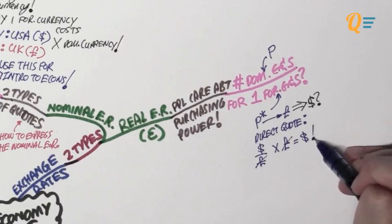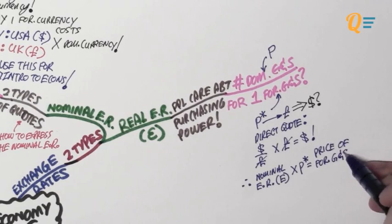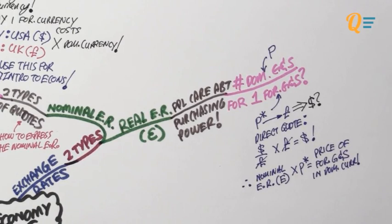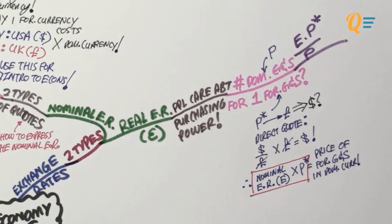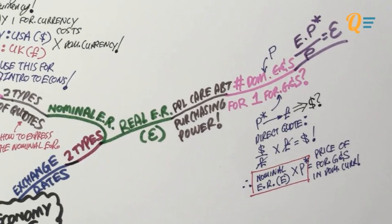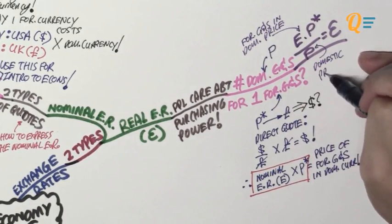We are using the direct quote, which means we take the domestic currency divided by the foreign currency. If we multiply this by the foreign currency, we get the domestic currency. Therefore, if we take the nominal exchange rate, denoted by capital E, and multiply it by the foreign generic price level P-star, we get the price of foreign goods and services in terms of domestic currency. Then we take that entire figure and divide it by our domestic price level P, and that gives us our real exchange rate epsilon — the amount of domestic goods and services we have to give up for one unit of foreign goods and services. Just remember that the star is always up in the sky, meaning P-star is in the numerator when using the direct quote.